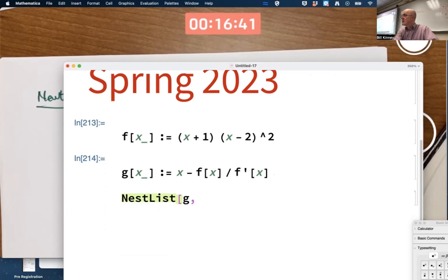That iterates the function g. Let's go ahead and see that it converges to negative one very rapidly if I pick something relatively close to negative one here, like negative 0.5, say with 10 iterations.